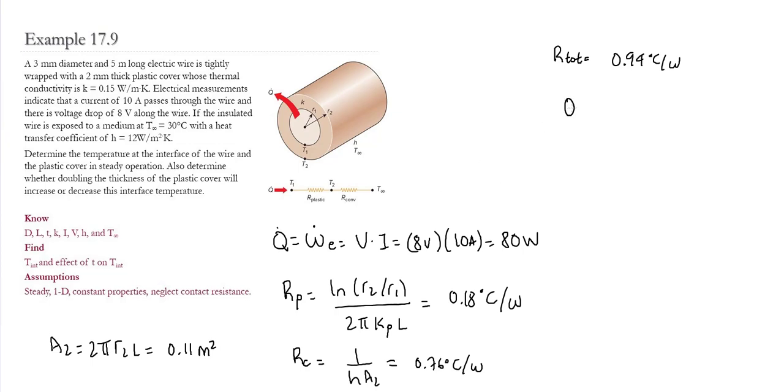Since we have the value of q dot, we could find what is the change of the temperature by using this relationship. We know that q dot is equal to the change in temperature divided by the resistance between the two points. So we're going to start with the temperature at T1, which is the interface. We want the interface between the wire and the plastic, so that is going to be T1. So we're going to say q dot is equal to T1 minus T infinity, which is the value that we have over here. And then we divide it by that total resistance. And then solving for T1, we find that the value of T1 becomes 105 Celsius.